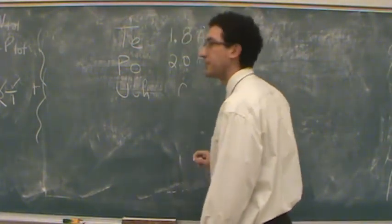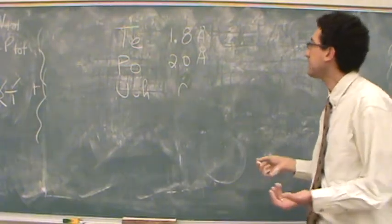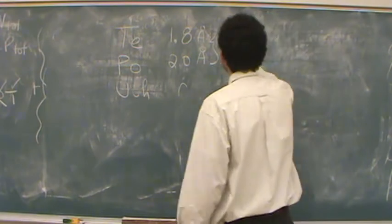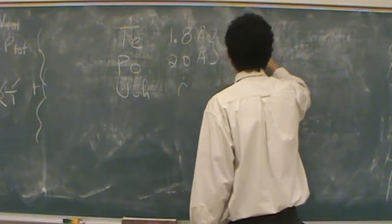We'll just put R. The easy way to figure this out is to say, well, what's the difference between these two? It would be 0.2 angstroms.